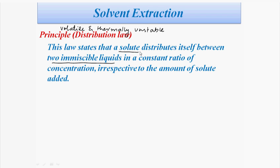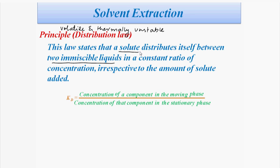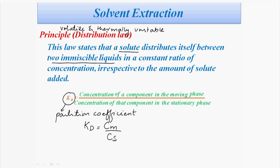One more important point: the two immiscible liquids are a polar and a non-polar liquid, because like dissolves like — if both are polar they mix, and if both are non-polar they also mix. So the two immiscible liquids must be one polar and one non-polar. The partition law can be mathematically expressed as Kd = Cm / Cs, where Cm is the concentration of the solute in the mobile phase and Cs is the concentration in the stationary phase. Kd is called the partition coefficient.